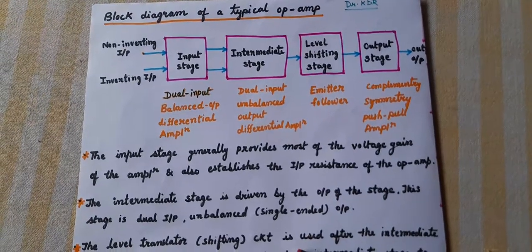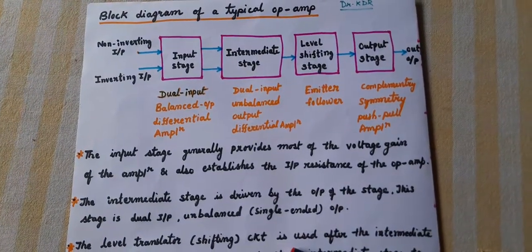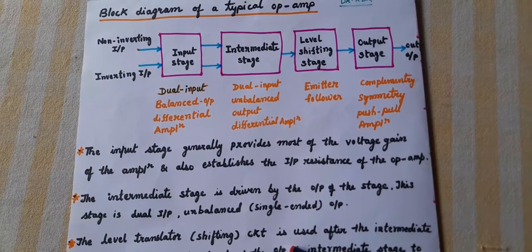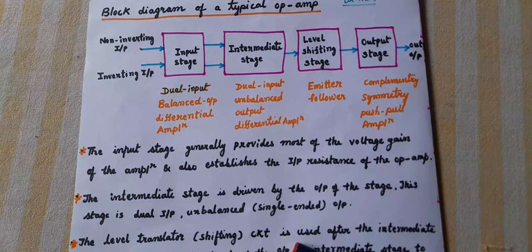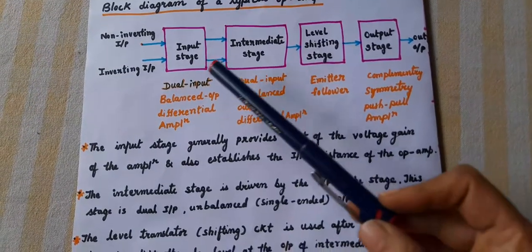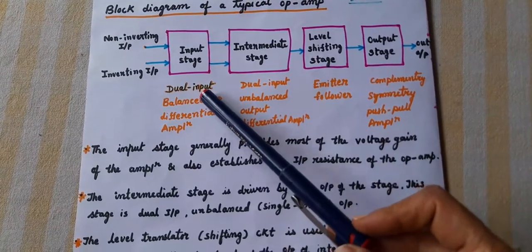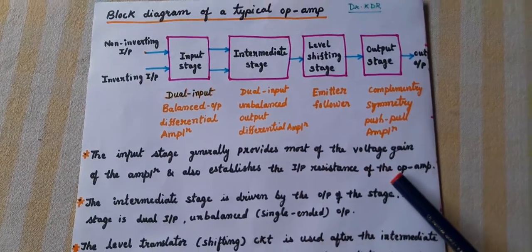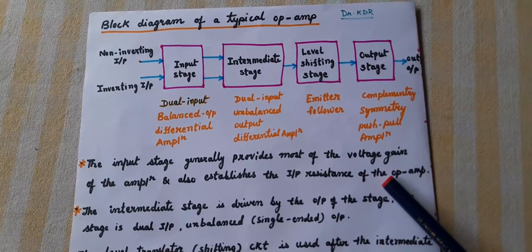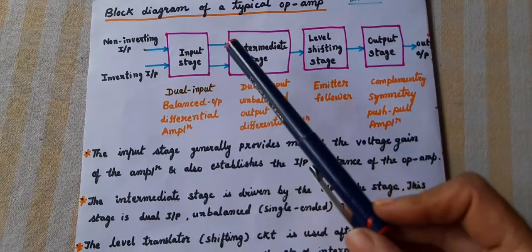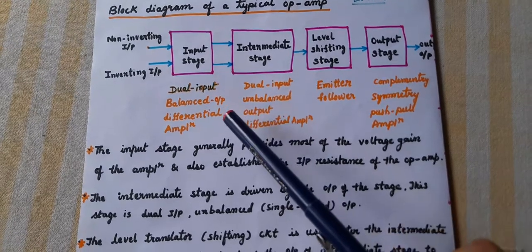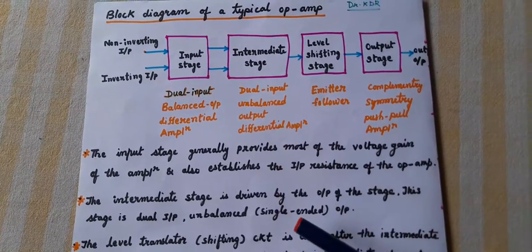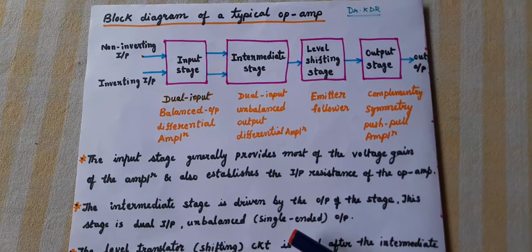This stage generally provides most of the voltage gain of the amplifier. The symbol of gain is voltage gain A. So the input stage provides most of the voltage gain of the op-amp and also establishes the input resistance of the op-amp.